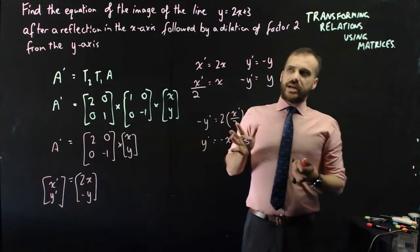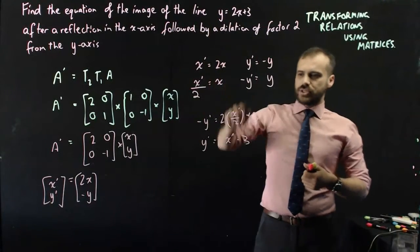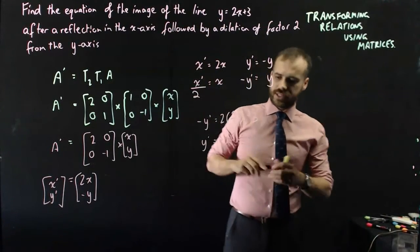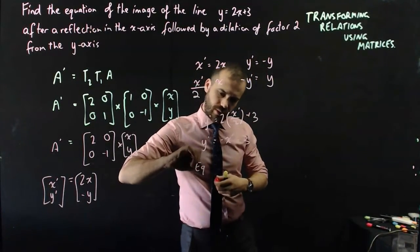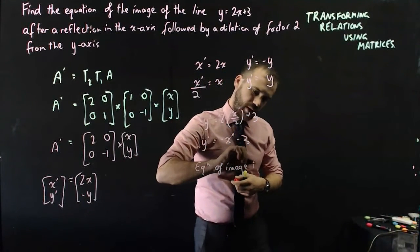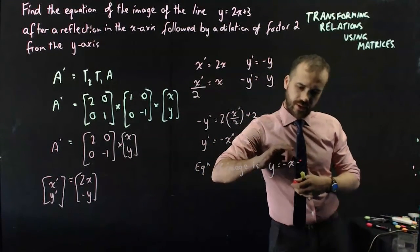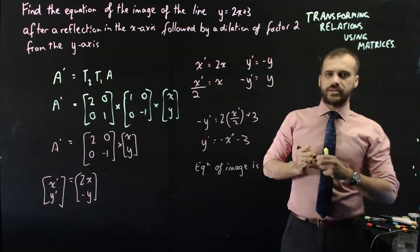Now I don't really need those dashes in there anymore because I'm just being asked to find the equation of the image. So I should just finish this up by saying equation of image is y equals negative x minus 3.